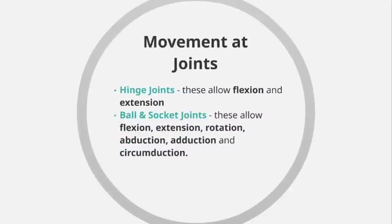In terms of movement of joints, it is important to be aware of which particular joint allows which particular movement. Hinged joints allow only flexion and extension — they can only move in one plane. Typically they allow the limb to bend and then straighten, which we can think of as flexion and extension.